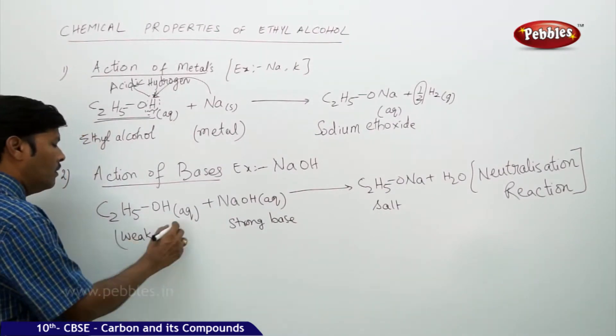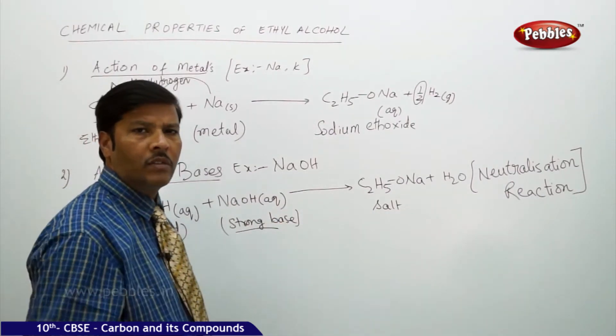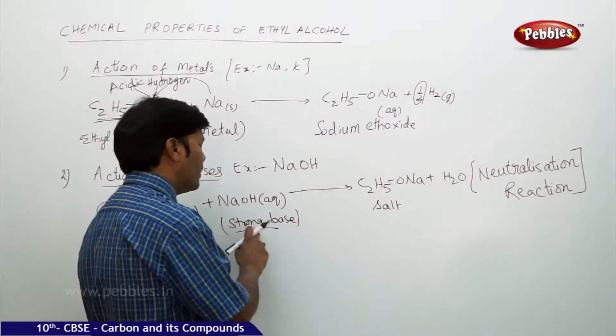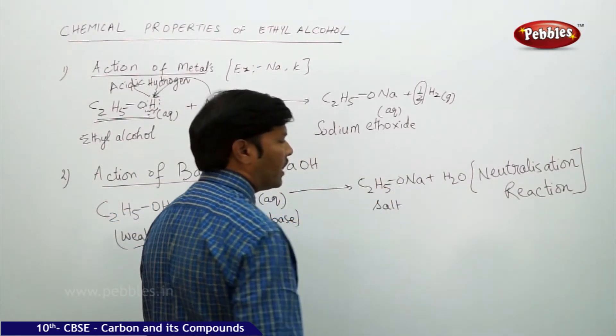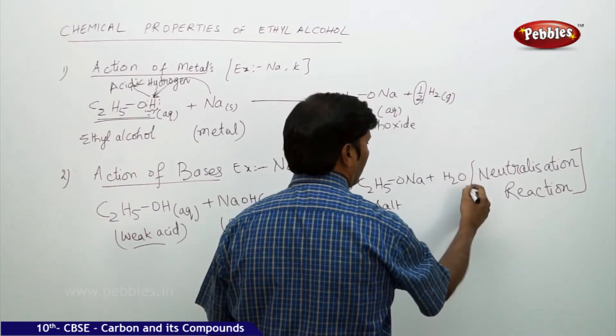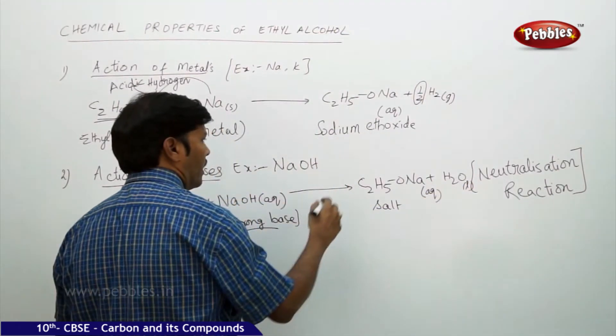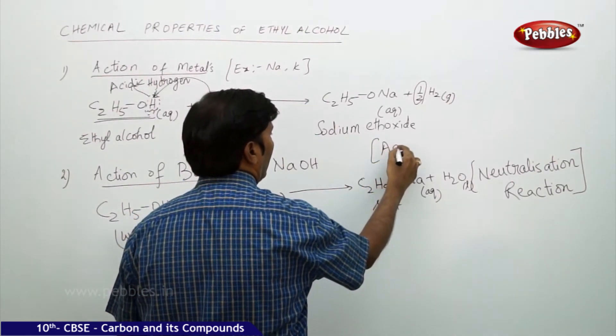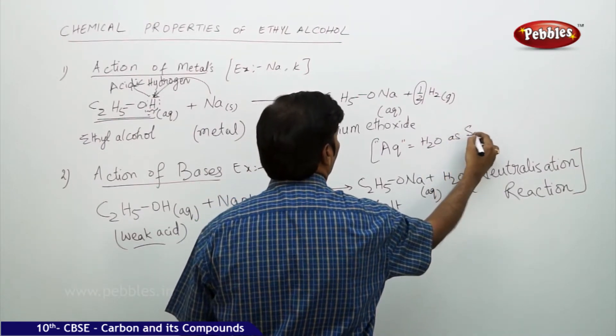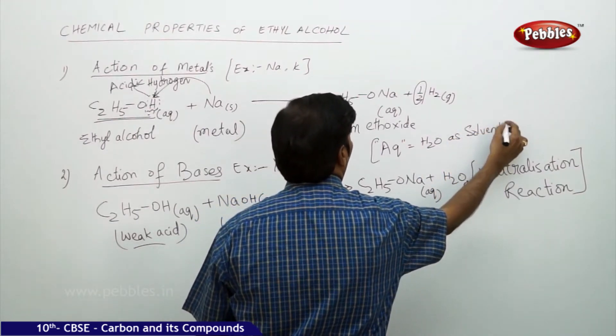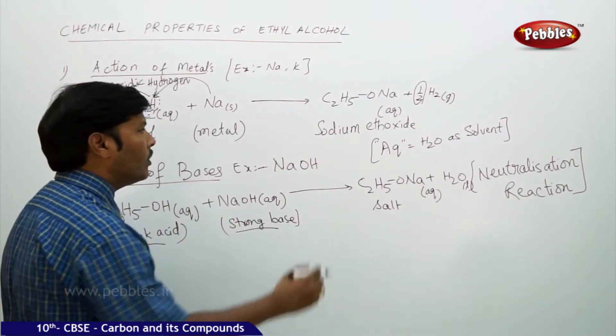Ethyl alcohol is a weak acid, sodium hydroxide is a strong base. When a weak acid is reacting with a strong base, it gives sodium ethoxide, that is salt, along with formation of water. This is aqueous. What do you mean by AQ? AQ means water as solvent, because ethyl alcohol can ionize in the presence of base only if you are taking water as a solvent.